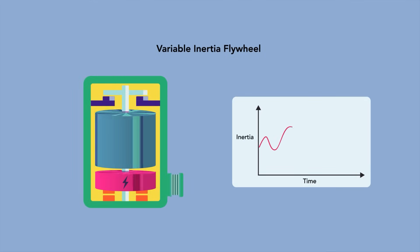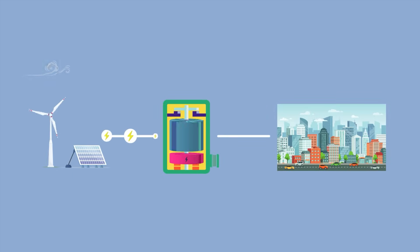Alternatively, rotational energy could be transferred to a flywheel with variable inertia, which can be connected to a rotating generator or motor. This type of flywheel could store and release energy while maintaining a steady rotational speed, allowing it to maintain a constant power system frequency.